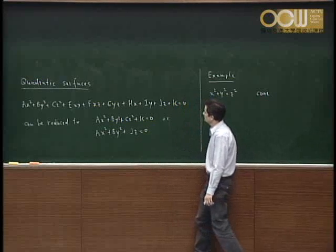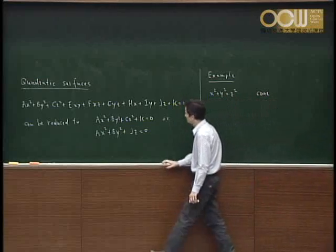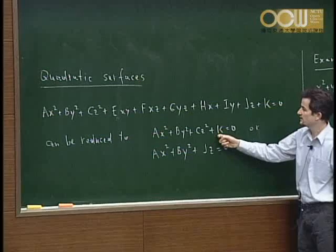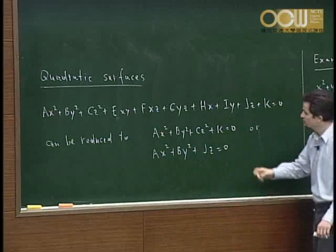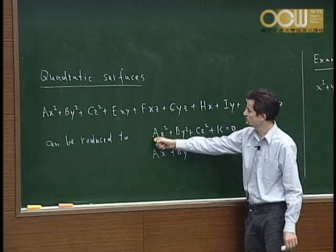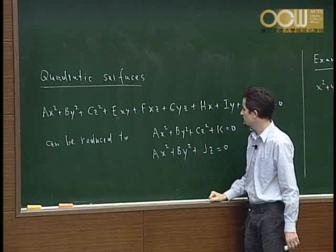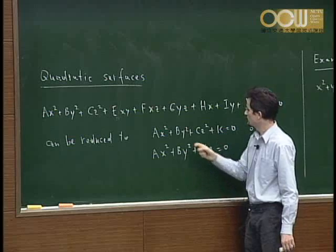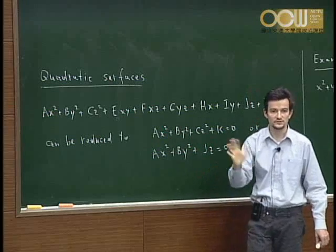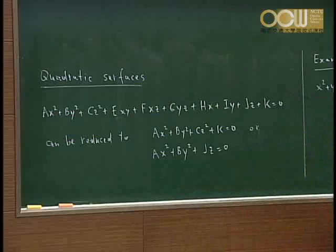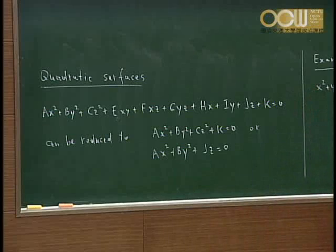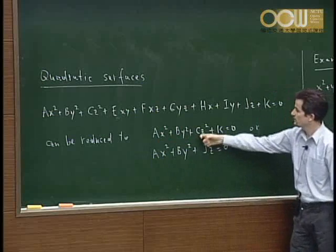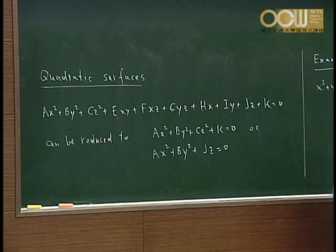If exactly one is negative, you have two different possibilities: either the constant term k is negative, or one of the squared-term coefficients is negative. Choosing one of the a, b, c coefficients negative with all others positive gives the same type regardless of which one you pick — you just interchange variable names. So there are essentially two different types here.